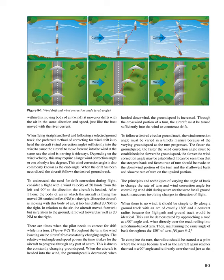To understand the need for drift correction during flying, consider flying with a wind velocity of 20 knots from the left and 90 degrees to the direction the aircraft is headed. After one hour, the body of air in which the aircraft is flying has moved 20 nautical miles to the right. Since the aircraft is moving with this body of air, it too has drifted 20 nautical miles to the right. In relation to the air the aircraft moved forward, but in relation to the ground it moved forward as well as 20 nautical miles to the right.